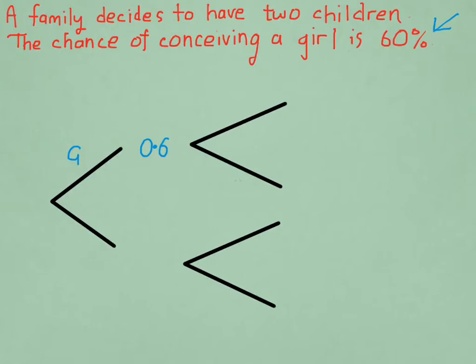But remember, there's not just a girl that they could have, they could also have a boy. And what is the chance of a boy being born? Well, if we subtract 60% from 100%, we're left with 40%. And that will be represented by 0.4. Now if you notice, when you add up the 0.6 and the 0.4, it should add to 1. Now this is a check for you, so at this stage when you're drawing the tree, you should make sure that what you've put there adds to 1.